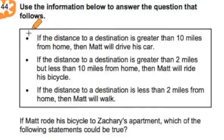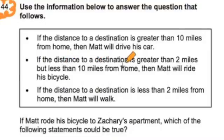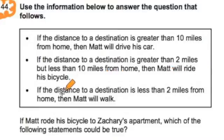Alright, so let's look at this. Bullet point number 1: if the distance to a destination is greater than 10 miles from home, then Matt will drive his car. If the distance is greater than 2 miles but less than 10 miles from home, then Matt will ride his bicycle. If the distance is less than 2 miles from home, then Matt will walk.